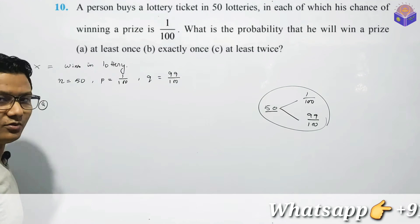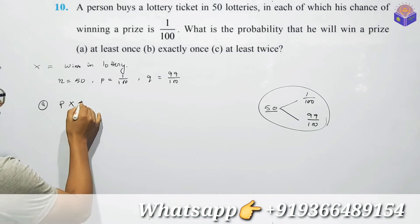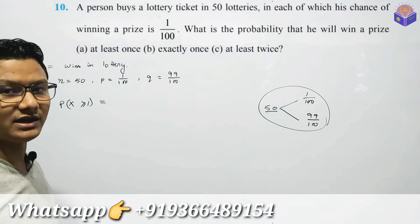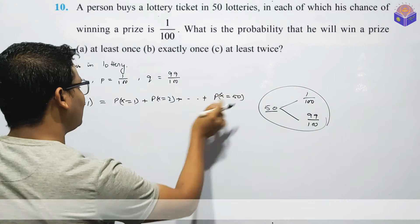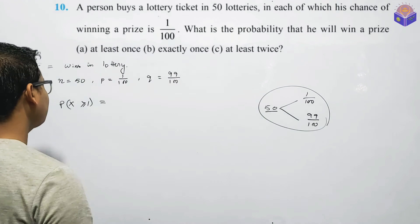So you can get more chances than $2. This minimum is 100% on the lottery ticket. So you don't have P of X equal to 1 plus P of X equal to 2. So how do you do this? P of X equal to 50 is equal to E. This idea is not — how do you understand this?